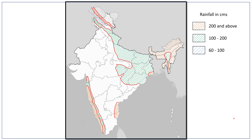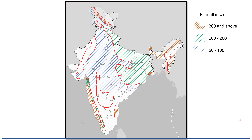Parts of Kashmir receive scanty rainfall to the tune of about 60 to 100 centimetres. The upper Ganga valley, eastern Rajasthan, parts of Punjab and Haryana also receive very scanty rainfall. The monsoon duration in these areas is very short, as these areas are the last to receive rainfall and first to see the retreat. Large parts of the Deccan plateau also receive very little rainfall. Western Rajasthan, parts of central Gujarat and southern Punjab receive about 40 to 60 centimetres of rainfall.